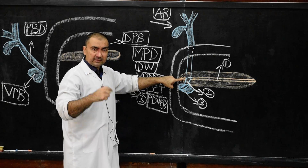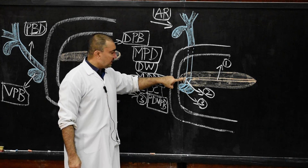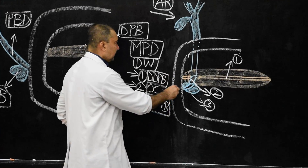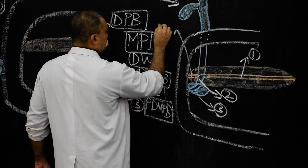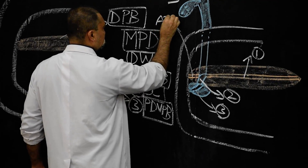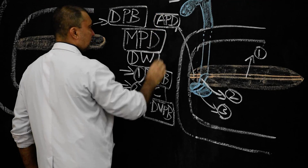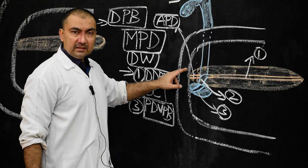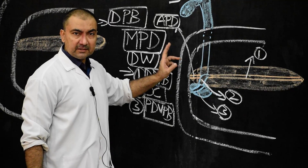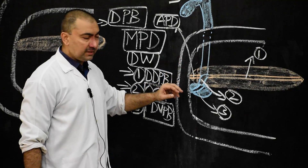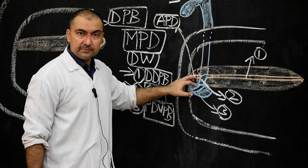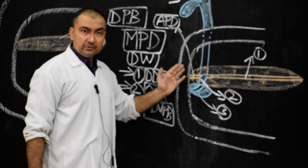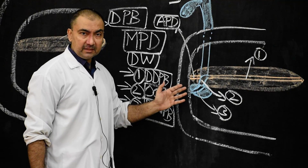The small proximal part of the dorsal pancreatic duct will lead to development of the accessory pancreatic duct of Santorini. What is the development of the duct of Santorini? It develops from the proximal part of the dorsal pancreatic bud. These points are very important in MCQs and question answers regarding the ductal pattern of the pancreas.